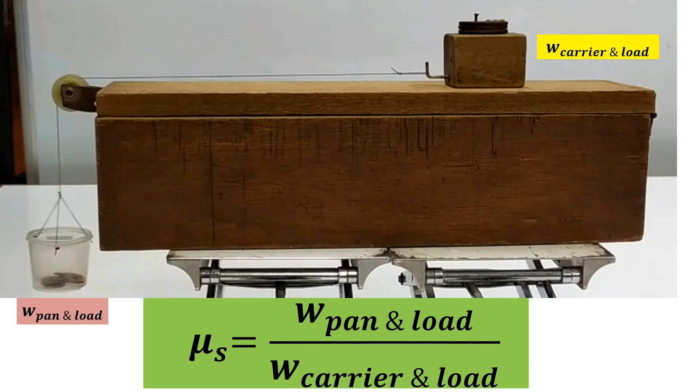For the first procedure, to get the coefficient of static friction, we will divide the weight of the pan and the load, which is this, divided by the weight of the carrier and the load, which is this.